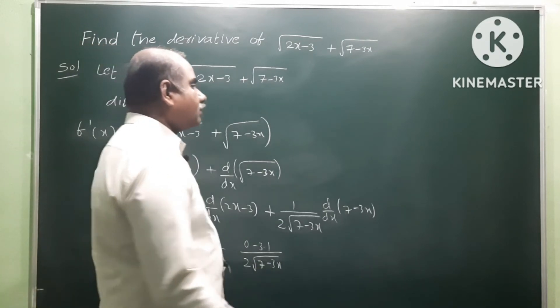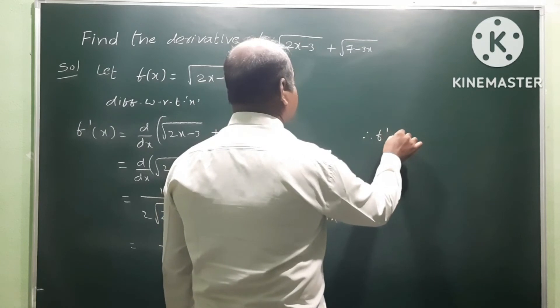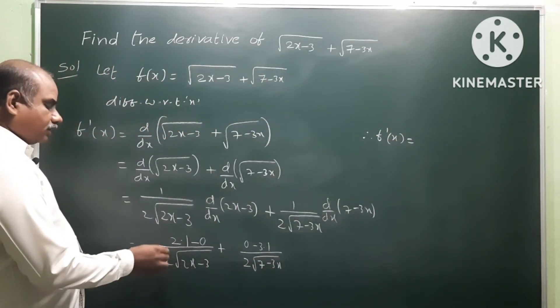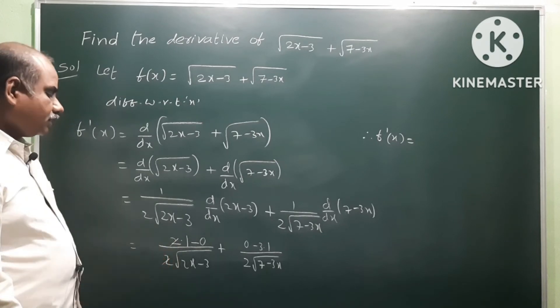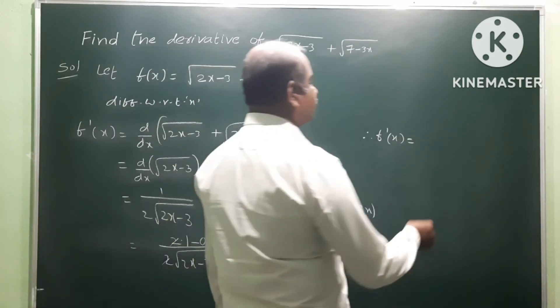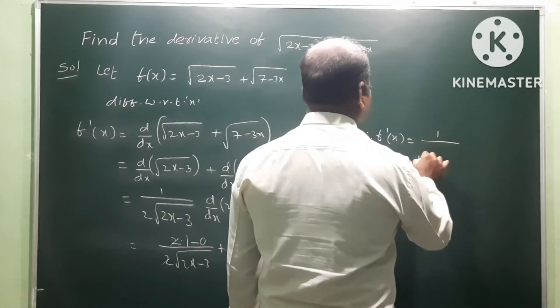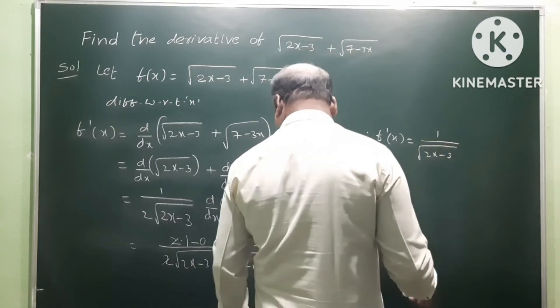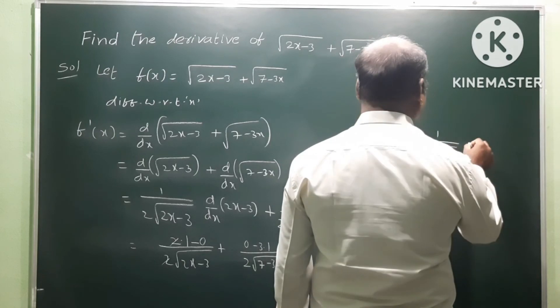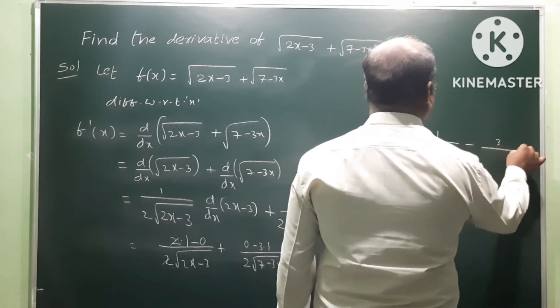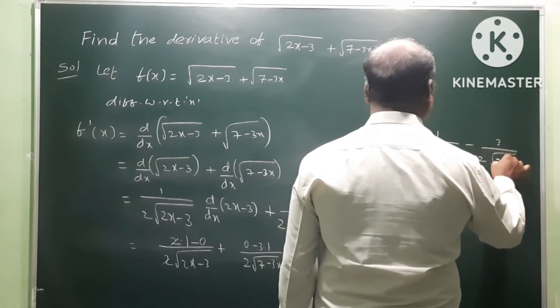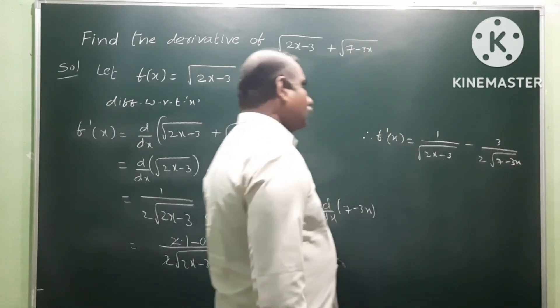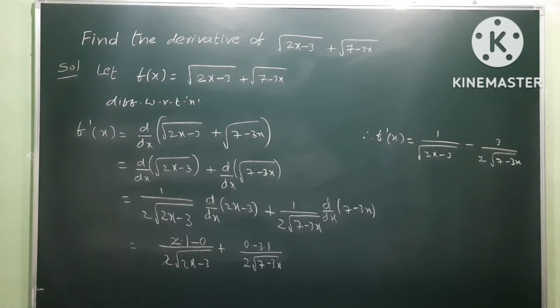So finally f'(x) equals 2 divided by 2 root of 2x minus 3. The 2s cancel, giving 1 over square root of 2x minus 3 minus 3 over 2 square root of 7 minus 3x. So that is the derivative of the given function.